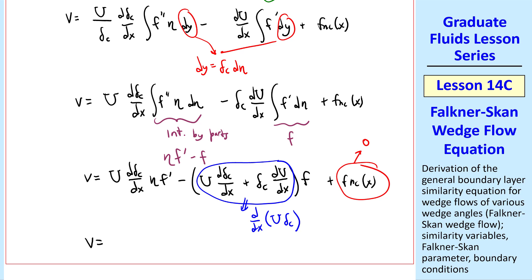So our final expression for v is U d delta c dx eta f prime minus d dx of U delta c times f. I should mention that letting this function be 0 is also possible by setting the stream function to 0 at the wall. We did a similar thing with the Blasius boundary layer.